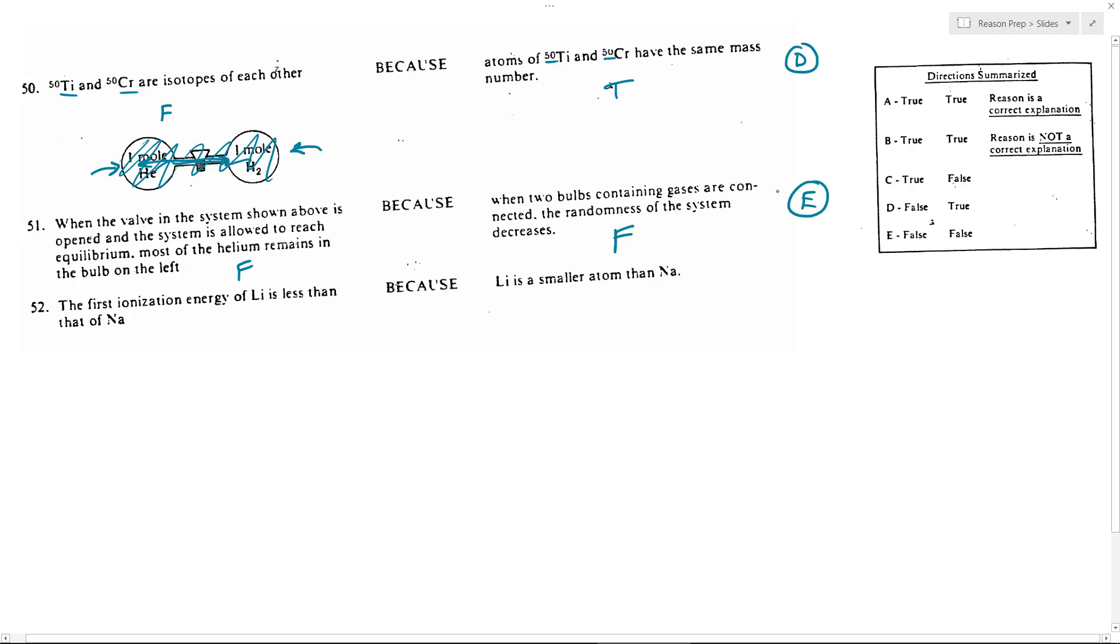The first ionization energy of Li is less than that of Na. So you need to know your trends for ionization energy here. Ionization energy decreases down a group. So therefore, Li's ionization energy would actually be greater than sodium's ionization energy based on that trend.